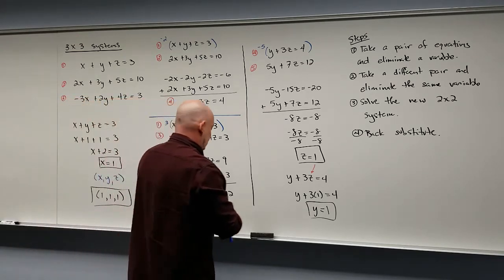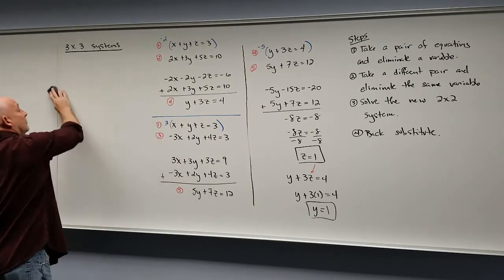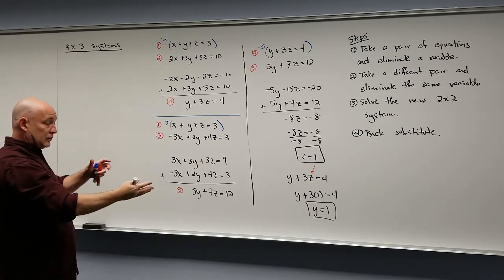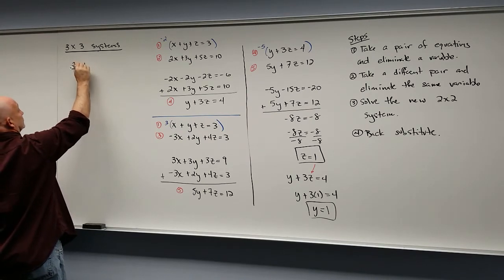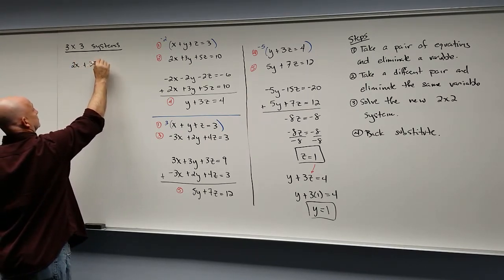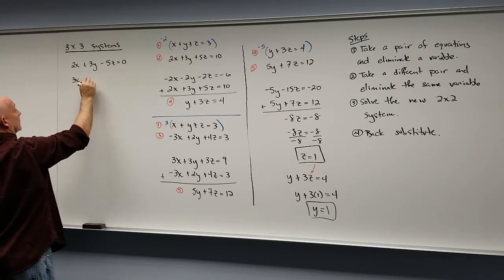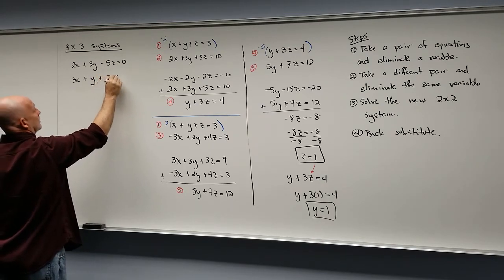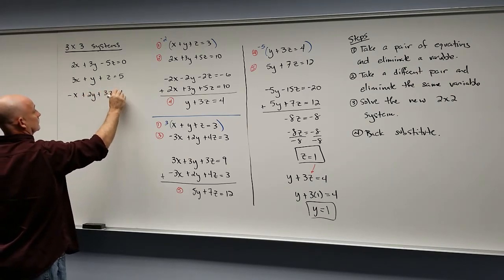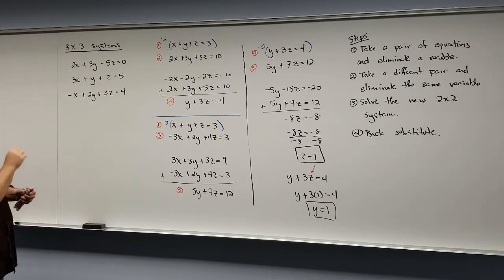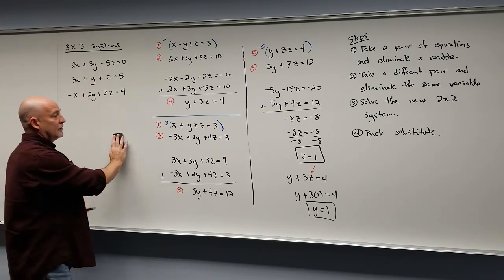Let's try one more of these. I'm going to give you a system to try. Since there are so many choices along the way, the odds that your work matches mine are very slim, so your work here is probably not going to match. Here's a 3 by 3 system — we have three equations with a total of three variables. Hit pause and see if you can solve this system.